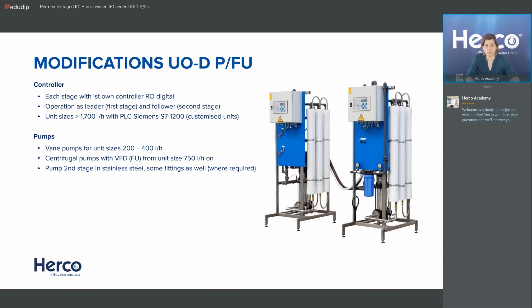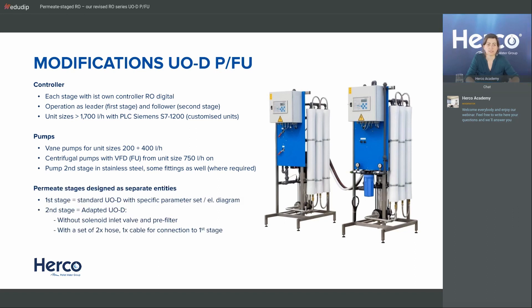The pump for the second stage — in both vane pump and centrifugal pump versions — is in stainless steel, because the water already has relatively low conductivity and is more aggressive. Some fittings are also in stainless steel, though some are still in brass where there's no problem with it — we haven't changed that. The permeate staged units are designed as separate entities, which is very obvious when you look at them.